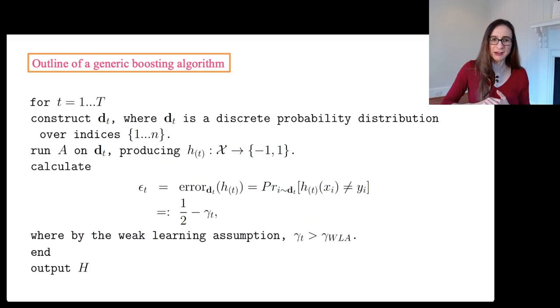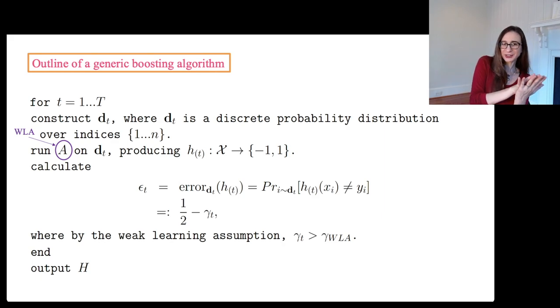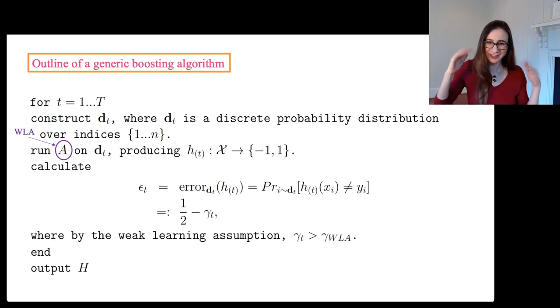I'm going to provide here the outline of a generic boosting algorithm. For each iteration of the algorithm, you construct a weight vector, which is a discrete probability distribution over the n training points. And then you run your weak learning algorithm on this weighted data set producing a weak classifier. So we have a weak learning algorithm producing a weak classifier. Try to get that terminology straight there.